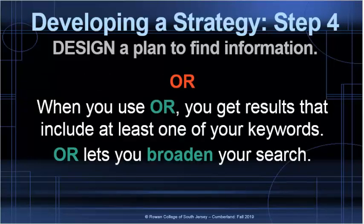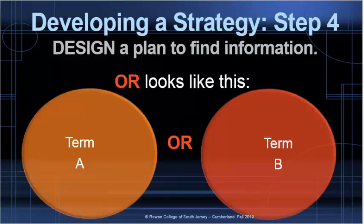Now we're going to take a look at OR. When you use OR, you're going to get results that include at least one of your keywords. OR is going to let you broaden your search or get a lot more results. For example, we could use OR to combine bullying OR cyberbullying.